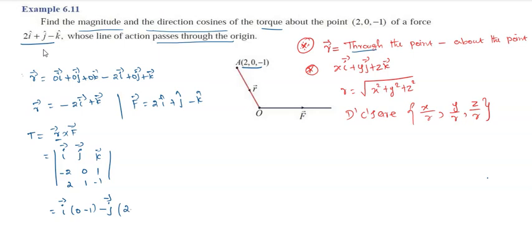For the k-vector component: first row, third column gives minus 2 times 1, that is minus 2, so plus k-vector times minus 2, giving minus 2k-vector. Therefore the torque t-vector equals minus i-vector plus 0j-vector minus 2k-vector. That is the calculated torque.